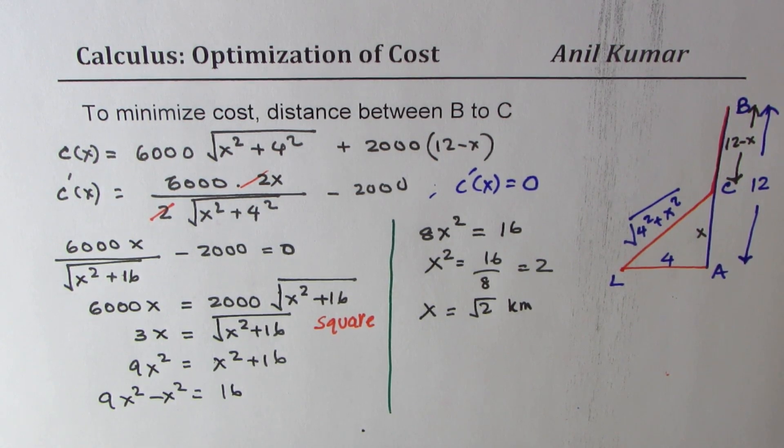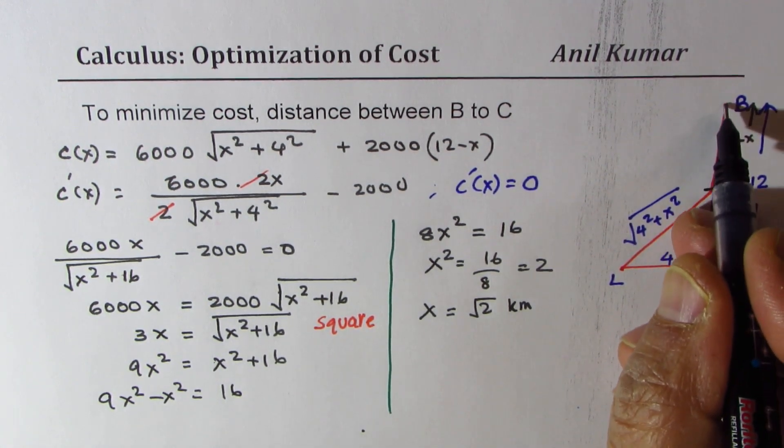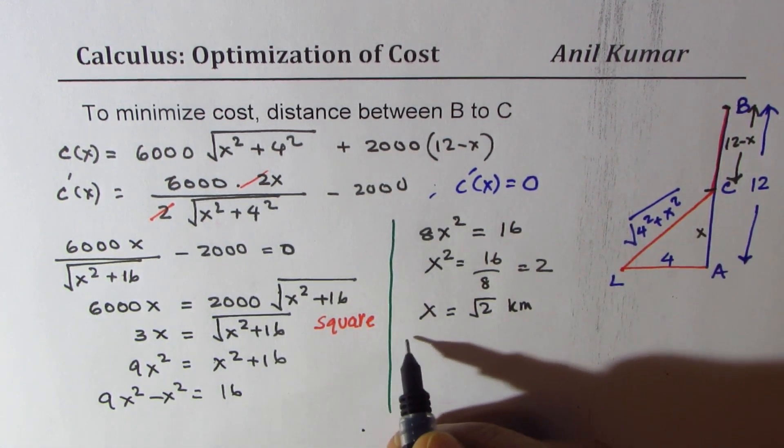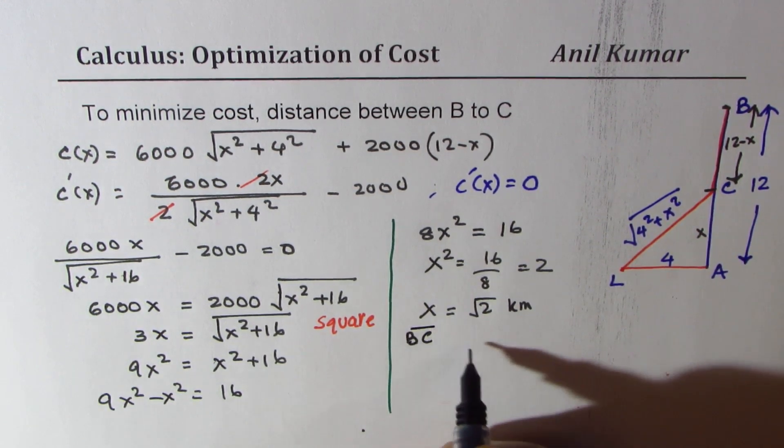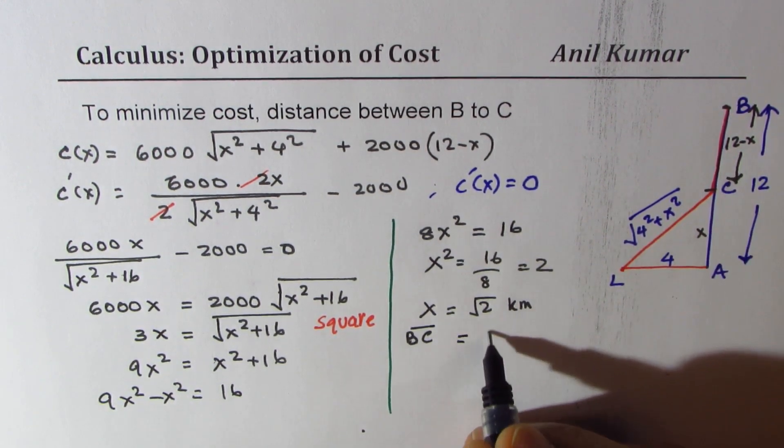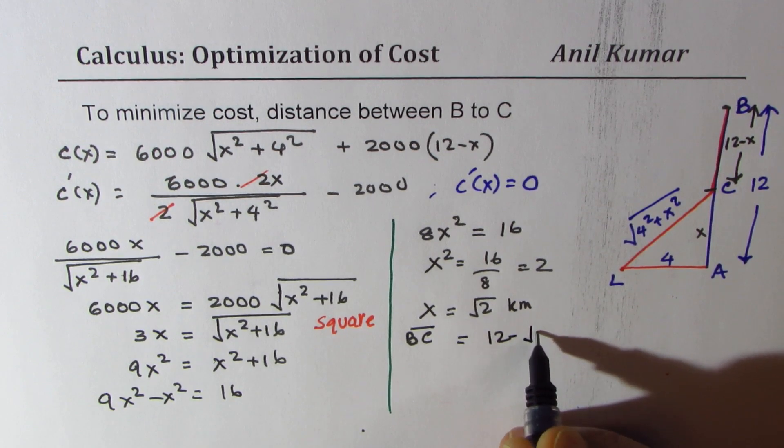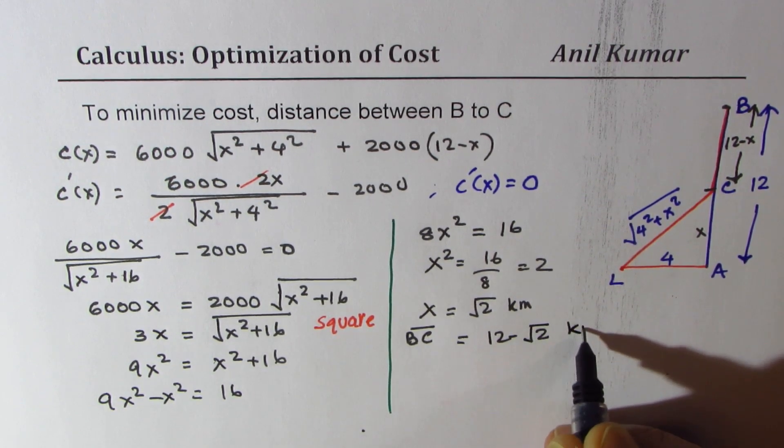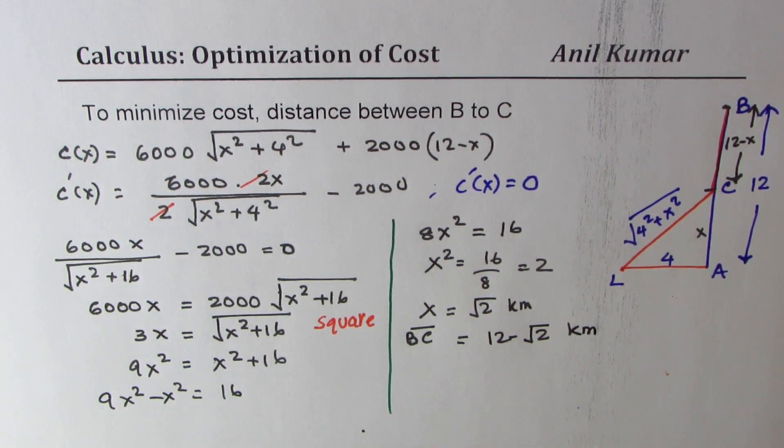What we really want to find is the location of point C where the power cable should enter the water. So from here, B to C is basically equal to 12 minus square root of 2 in kilometers. Let's use calculator to find this answer.